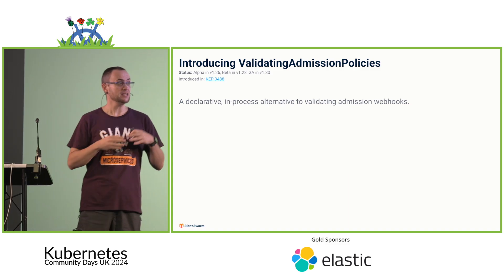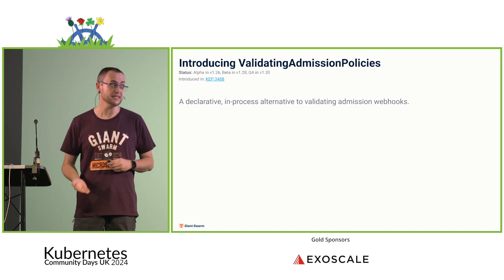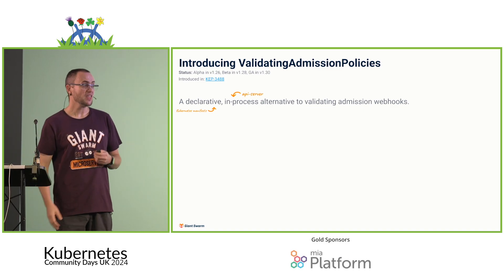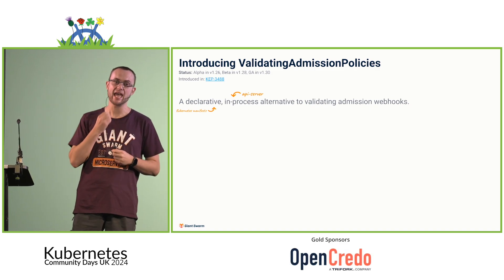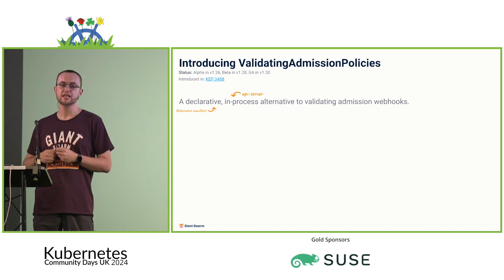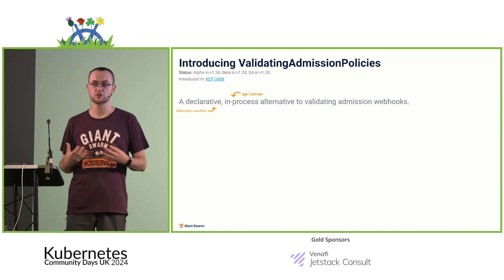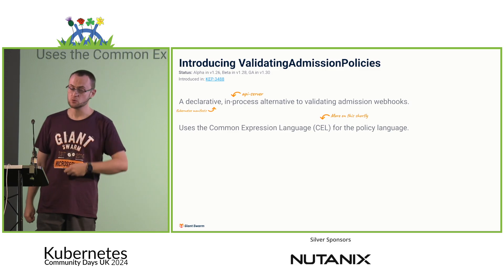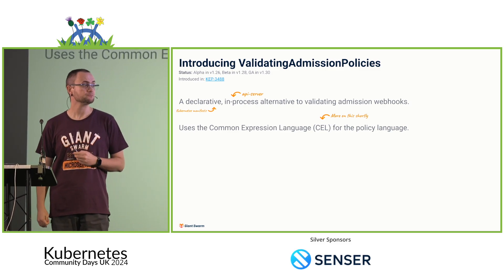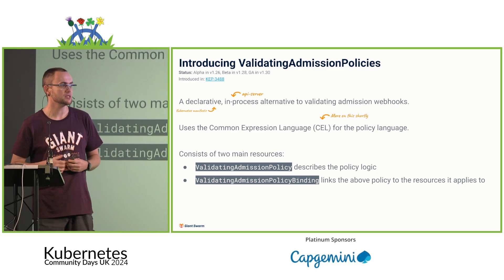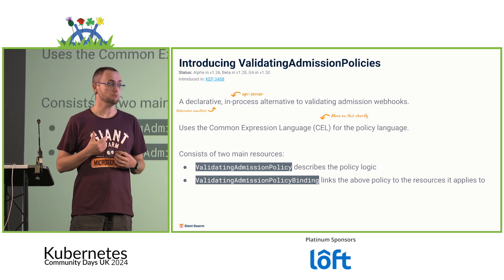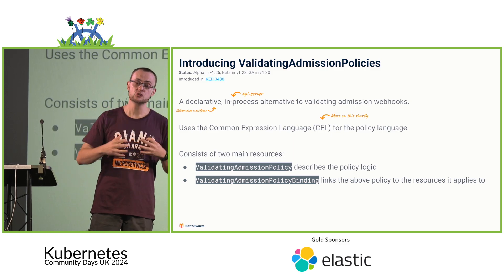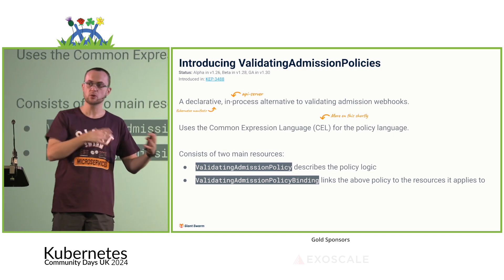These are a declarative in-process alternative to validating admission webhooks. Declarative means they are configured using CRDs within your cluster. In-process means the functionality actually runs inside the API server process itself — so you're not reliant on any external pods or services that could potentially go down. They use Common Expression Language — which I'll be referring to as CEL — for the policy language.